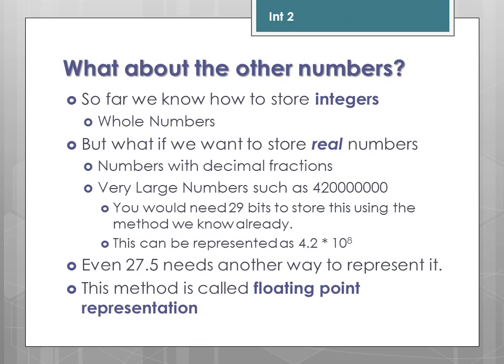So what about the other numbers? At the moment, we know how to store integers, i.e. whole numbers. But what if we want to store real numbers, i.e. numbers with decimal fractions? Or even very large numbers. For example, if you are storing this decimal number here, which is approximately 1,234,560 — around 420 million — you would actually need 29 bits to store this using the integer representation we already know. This can be represented as 4.2 times 10 to the 8. Even a small number such as 27.5 needs another way to represent it. This method is called floating point representation.